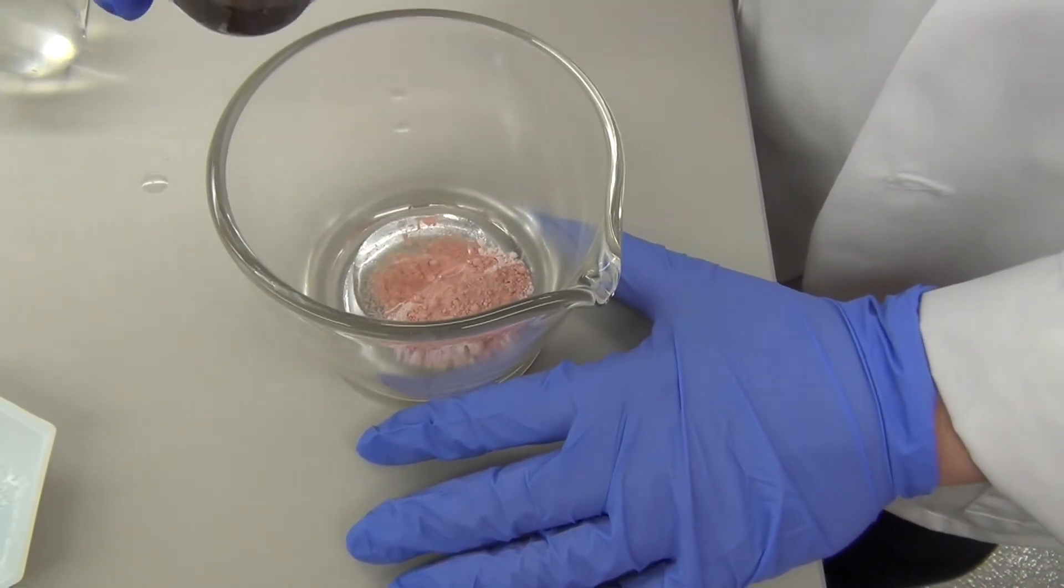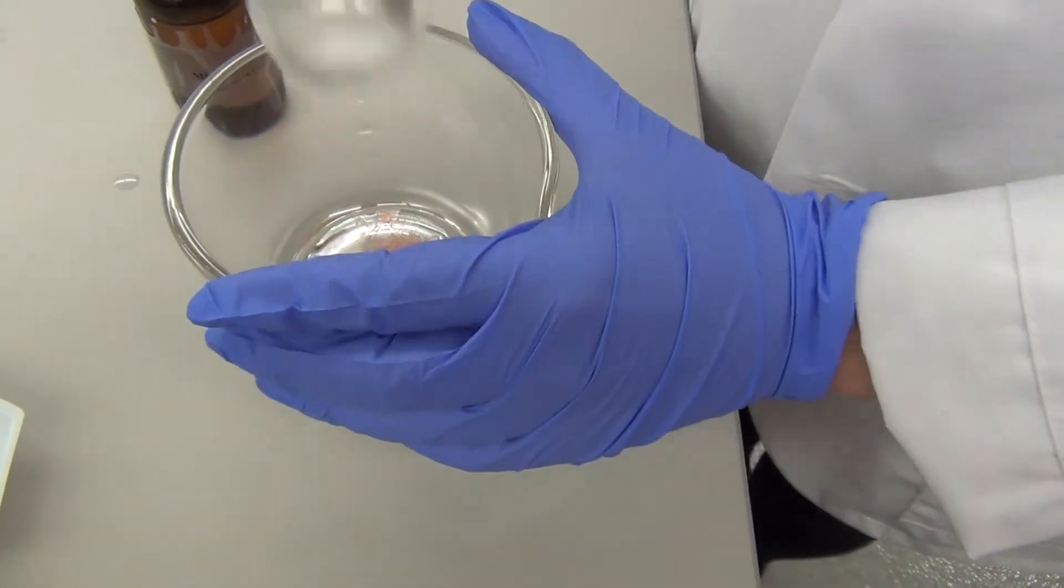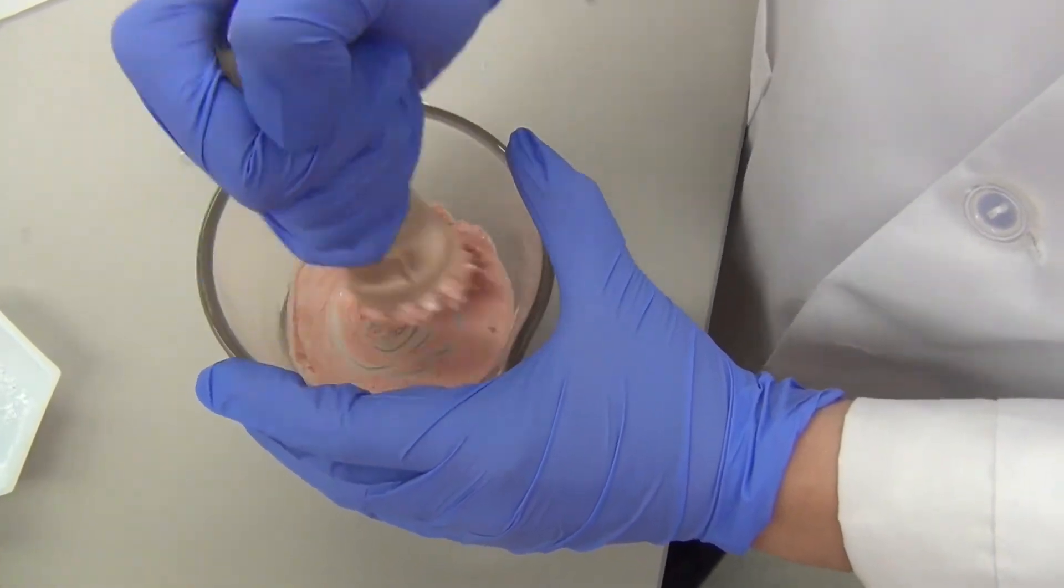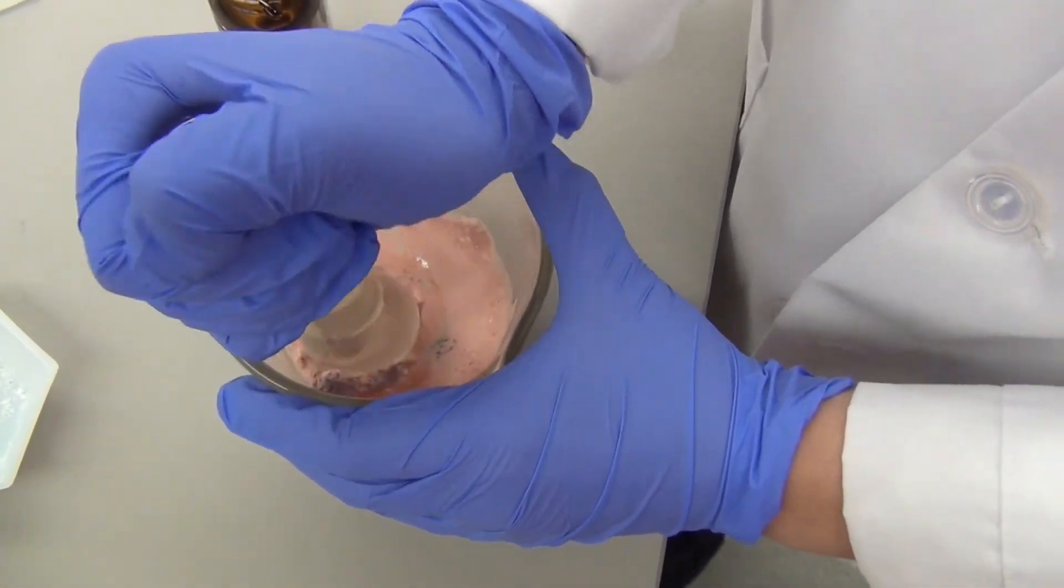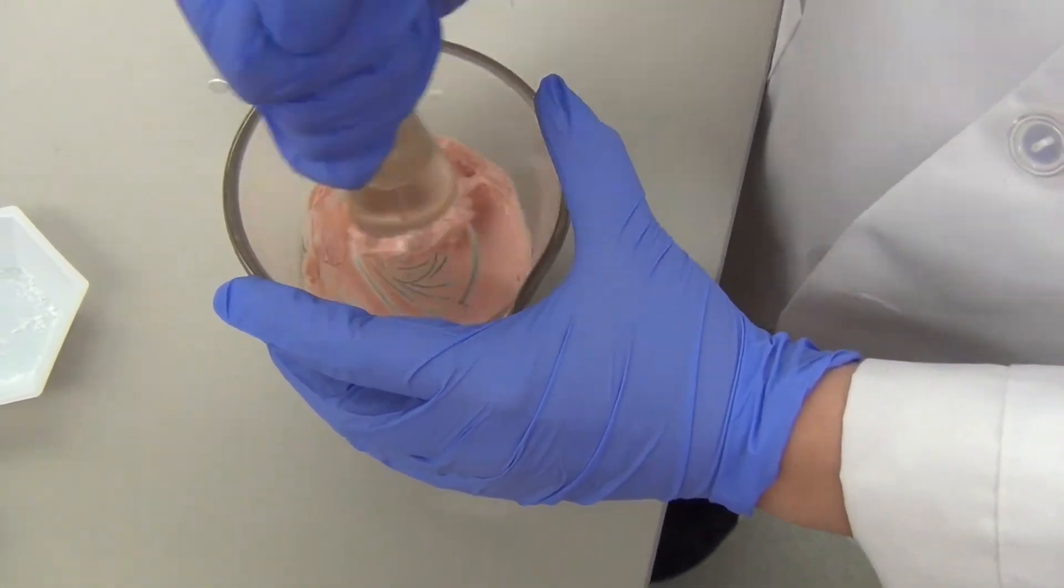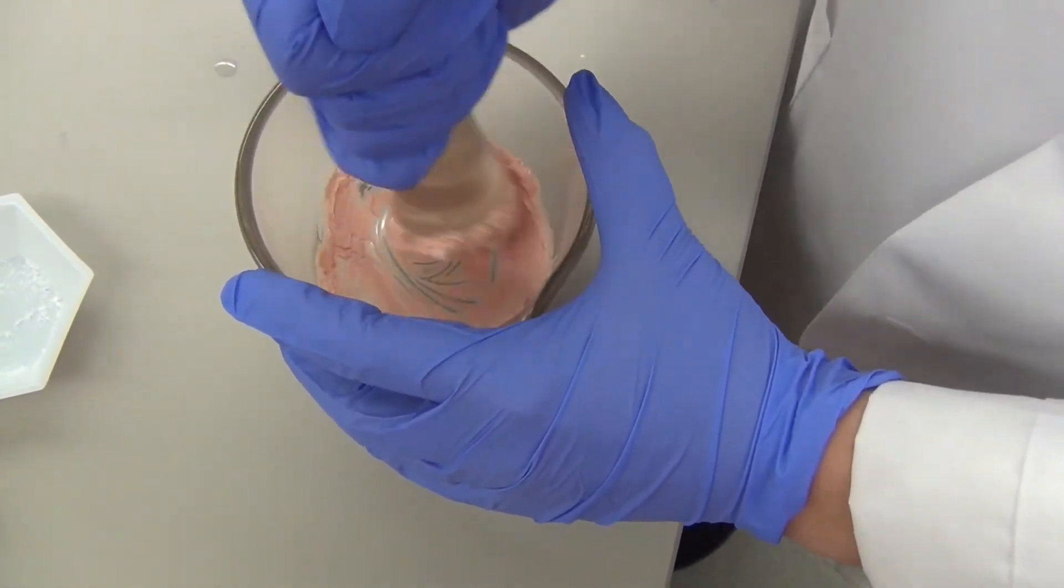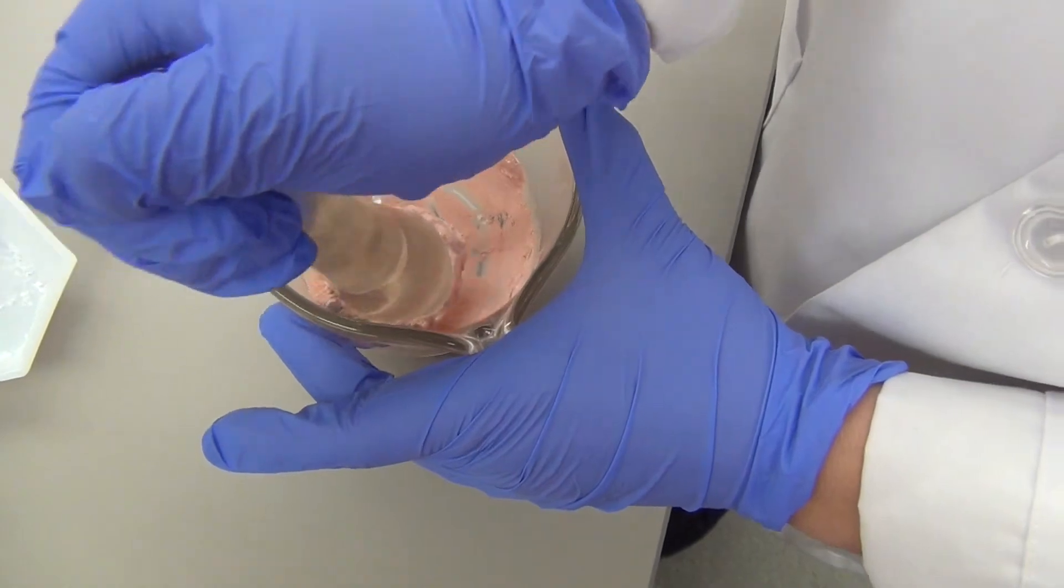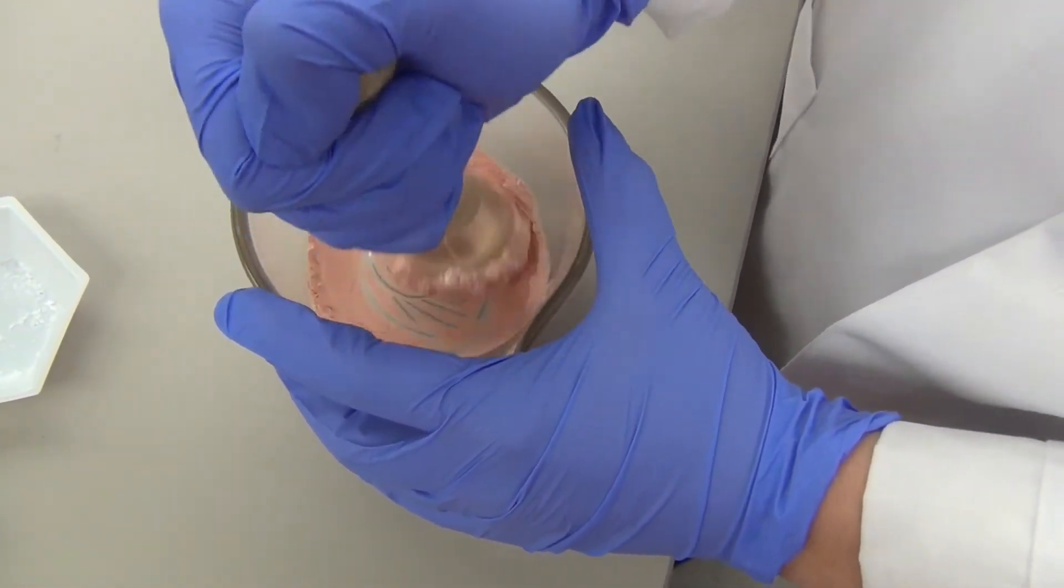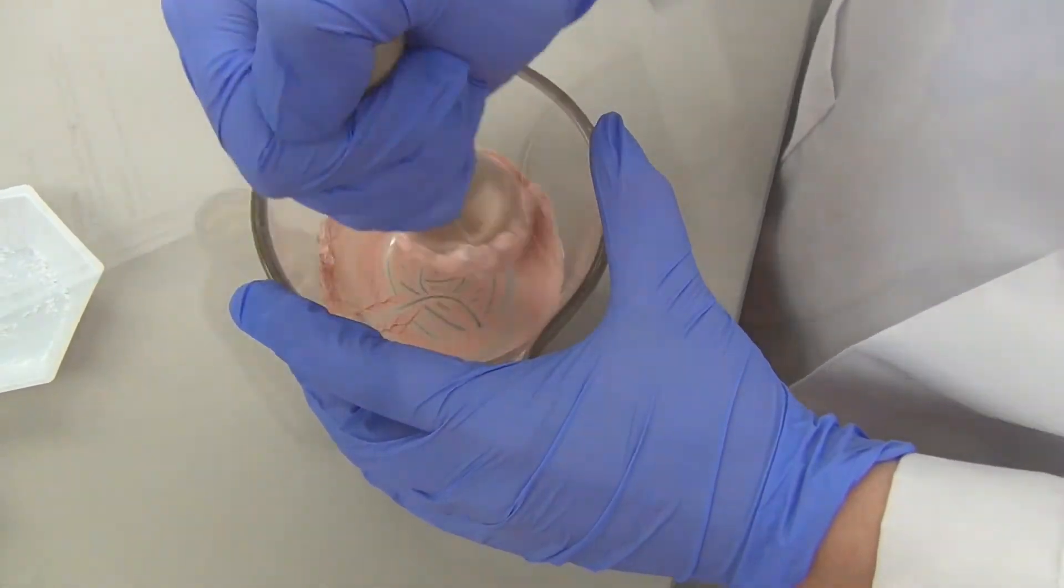The levigating agent you use is dependent on what type of drug you're dealing with. If your drug is hydrophilic, you are going to want to use a hydrophobic levigating agent so that you can combine the drug with the vehicle. In this case, we have a hydrophilic drug, so we are going to use a hydrophobic levigating agent, which would be mineral oil. If you were dealing with a hydrophobic drug, you would need a hydrophilic levigating agent, like glycerin.